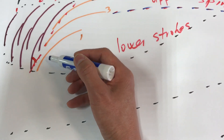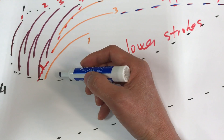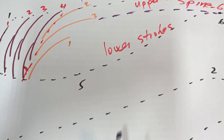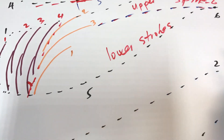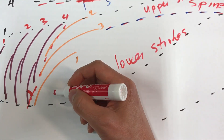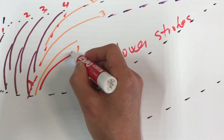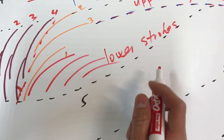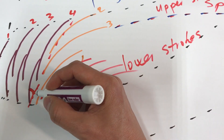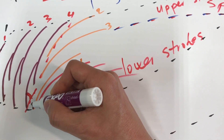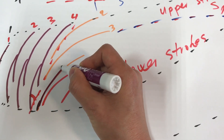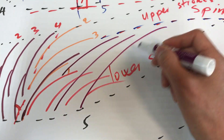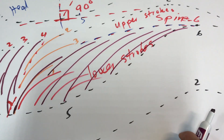Why do we need to do number one right here? Because number one will tell you what the next lower stroke will be — where the lower stroke should be heading. Just imagine you do number one like this and now all subsequent strokes go in that direction, and that looks really bad. That's the reason for number one.